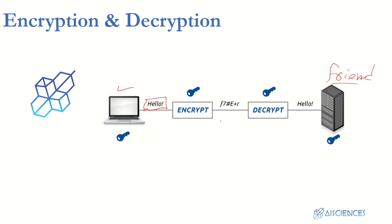There's a possibility that there will be some listener over the network. If you're familiar with networking you probably know about this — if you put listeners on the network, you can listen to what one computer is saying to another. So if you send your message as-is, there are chances the listeners will get the message you're trying to send to your friend.